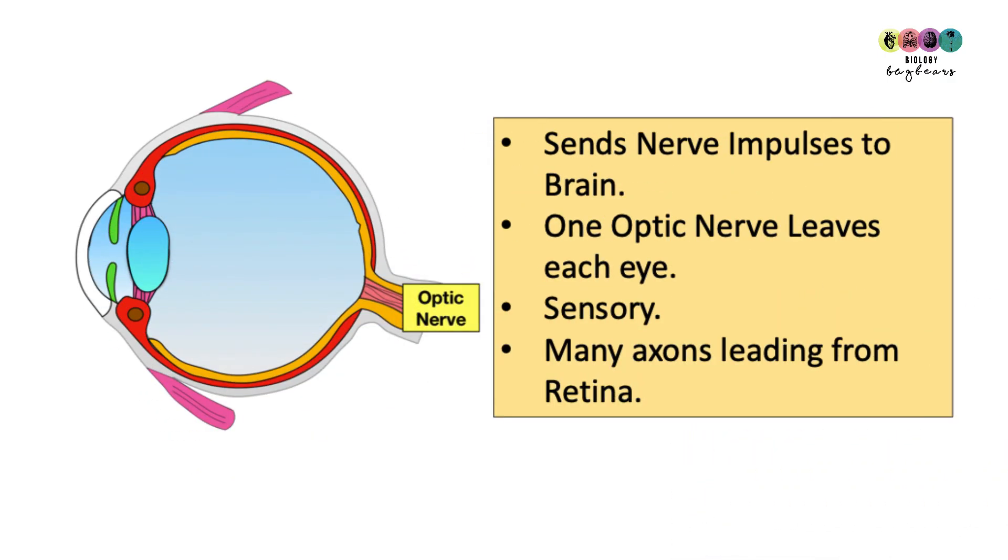The optic nerve sends impulses to the brain. There's one optic nerve leaving each eye. It's a sensory nerve and it's made up of many axons leading from the retina.